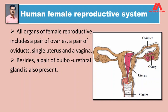Vidyarthi mitrano, ya samorchya chitra made aapnaala maanavi stri prajanan sanstha yaache thalik bhaag pahayala miltat. Ya made pramukhayne Oviduct, Ovary, Uterus aani Vagina he bhaag tyatikani pahila merta. All organs of the female reproductive system include a pair of ovaries, a pair of oviducts, a single uterus, and a vagina.